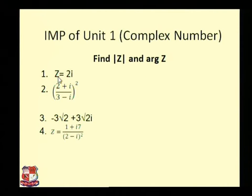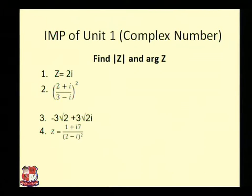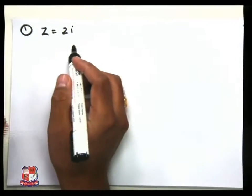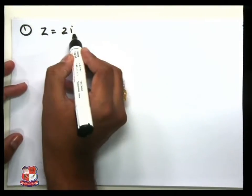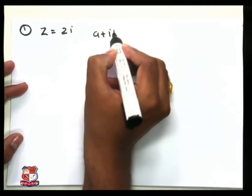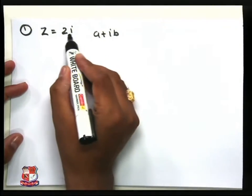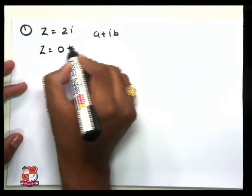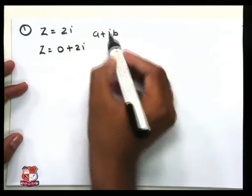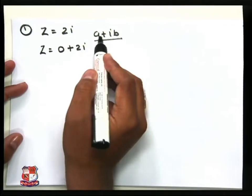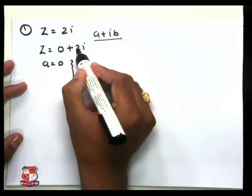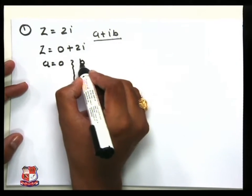First problem: z = 2i. We write down the problem — z = 2i. We arrange this term into a + ib form. Our value is 2i, so we can write z = 0 + 2i. Comparing both terms: a = 0, and comparing 2i with ib, we get b = 2.